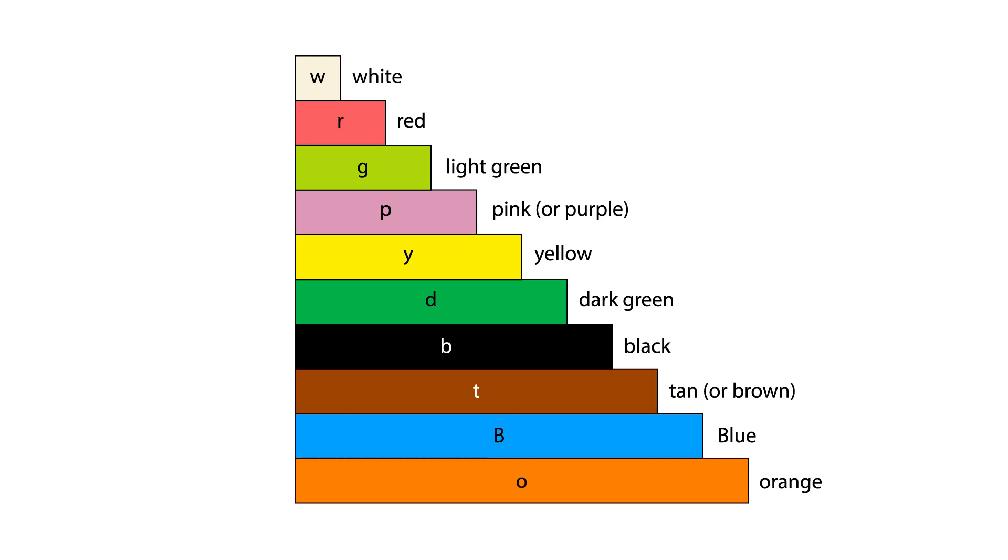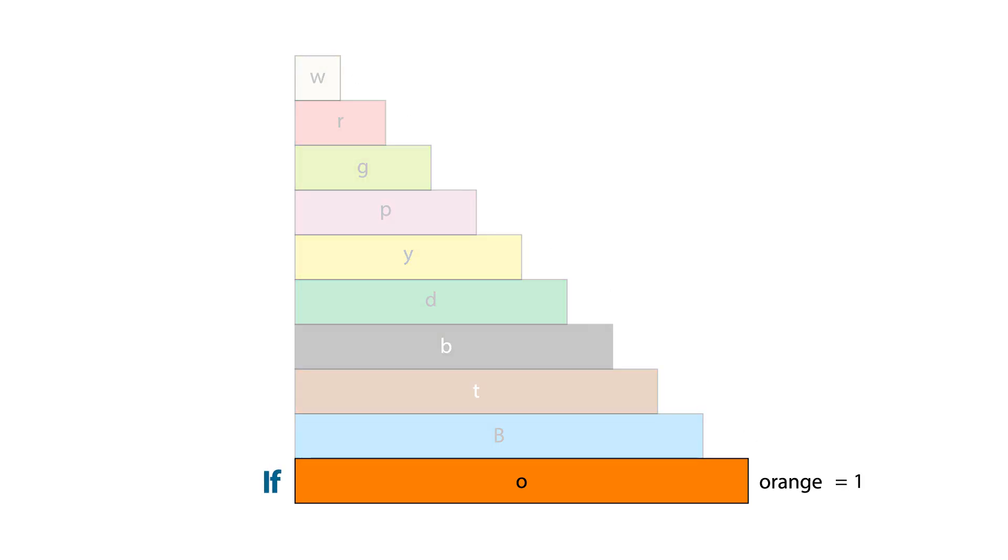For example, if you give the orange rod a value of 1, then the white, red and light green rods have values of 0.1, 0.2 and 0.3 respectively.